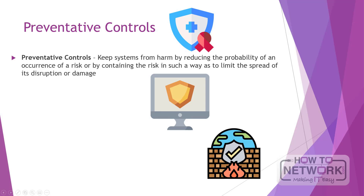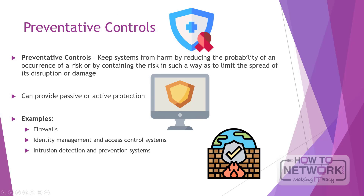Preventative controls can provide passive or active protection. The same type of controls used for physical passive deterrents also brings some prevention with them. Preventative controls keep systems from harm by reducing the probability of an occurrence of a risk, or by containing the risk in such a way as to limit the spread of its disruption or damage. For example, a locked door will prevent an attacker from gaining entry to the premises, unless they want to elevate their level of risk by breaking the lock or the door. Examples of preventative controls include firewalls, identity management and access control systems, and intrusion detection and prevention systems, often used in conjunction with one another to provide a solid prevention architecture.